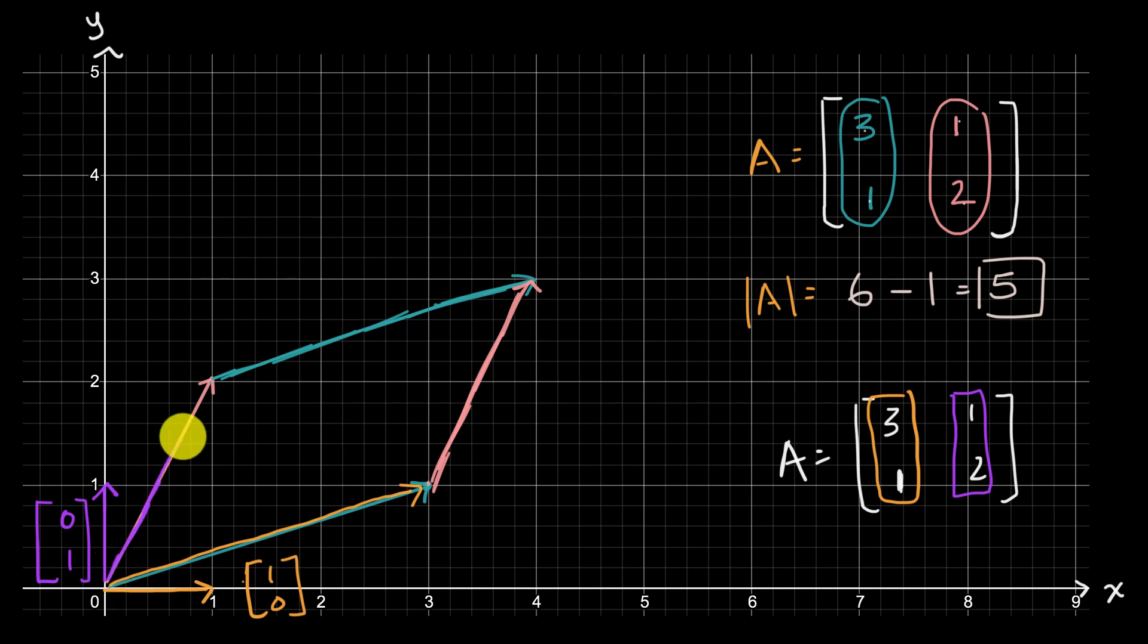But then you could think about it. It's also not just transforming the individual vectors. It's also scaling up the area defined by the vectors. So the area defined by these two original unit vectors, we could see it's one by one. It's that area right over there. So this transformation is taking us from an area of one to an area of five. It's scaling it up by a factor of five.